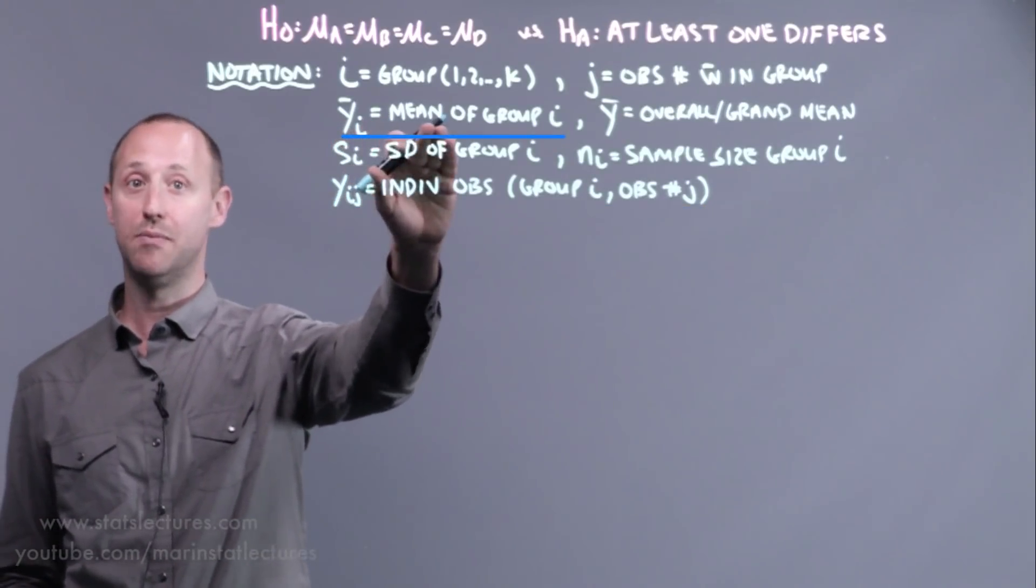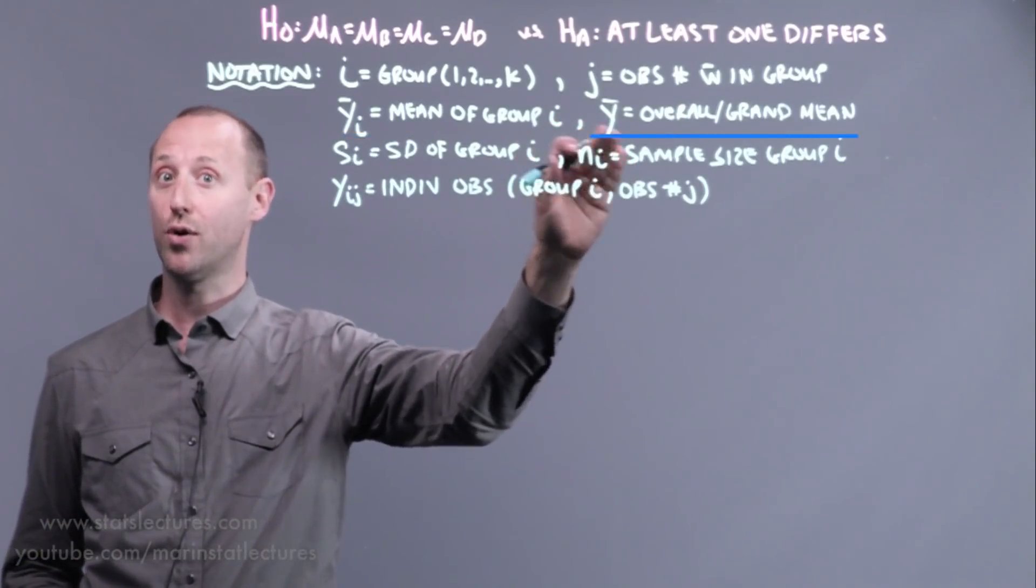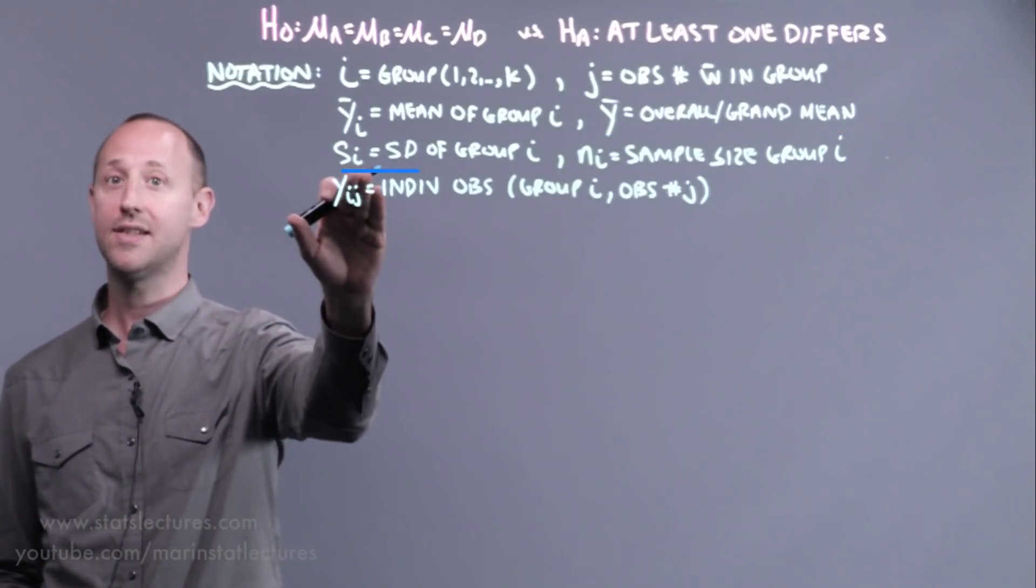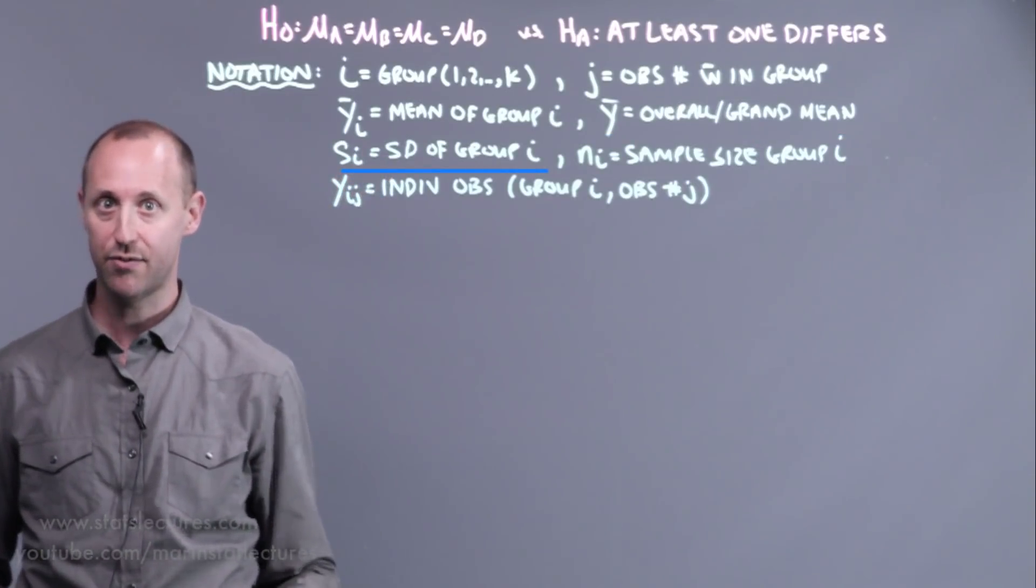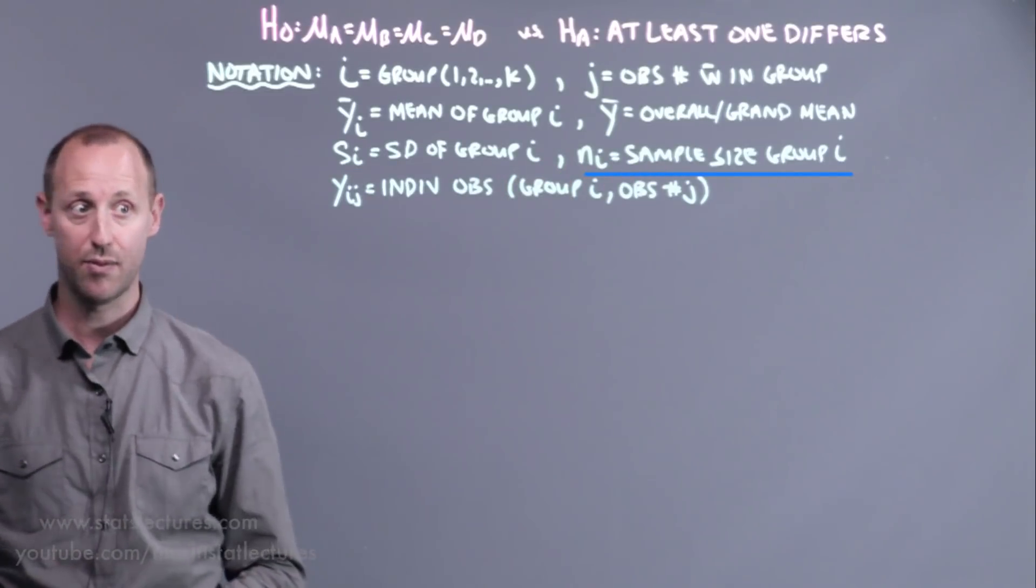Yibar is the mean for group I. Ybar with no subscript is the overall or grand mean, the mean weight loss for everyone in the study. And SI is the standard deviation for people in group I, and NI is the sample size for people in group I.